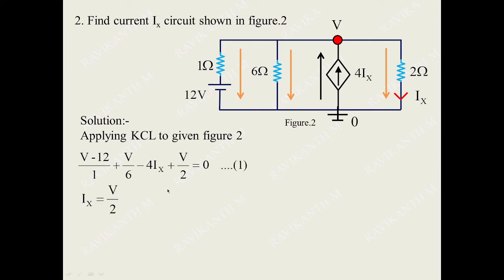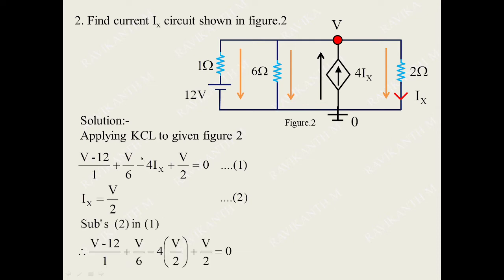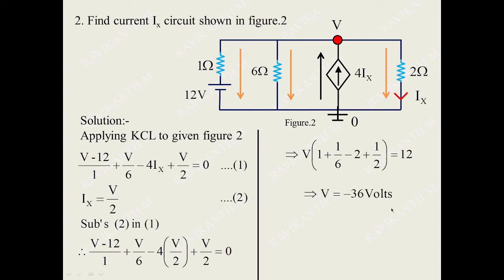We can get the value of ix from the branch through 2 ohms, where ix equals V/2. Substituting this into the KCL equation gives the complete equation in terms of V, yielding V equals minus 36 volts. Once we get voltage as minus 36 volts, ix equals V/2 equals minus 36/2 equals minus 18 amperes. The magnitude and direction of this result can be cross-checked with another method.